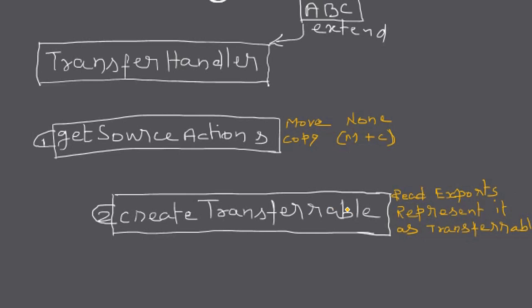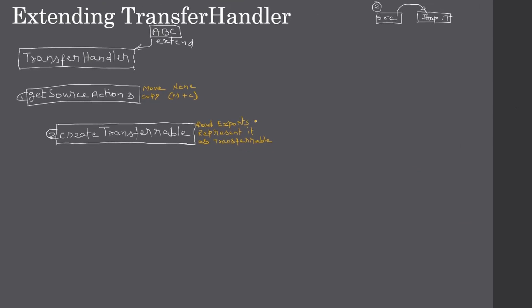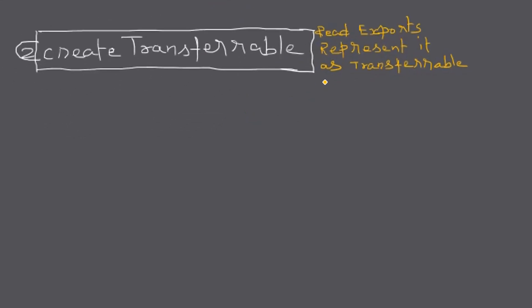createTransferable reads all the selected JList items we want to drop to the target — this is the export step. We prepare the export content and represent it as a Transferable object. In our case we will use the StringSelection object. StringSelection implements the Transferable interface. First we will form a string based on the selected items, then represent it as a Transferable by constructing a StringSelection.